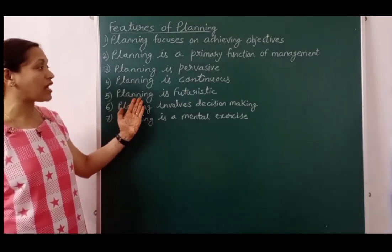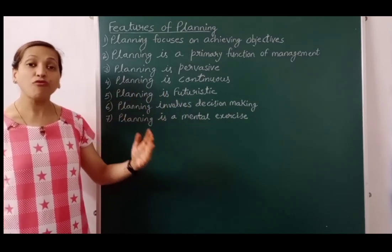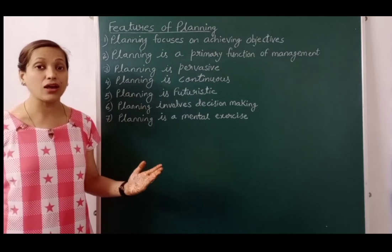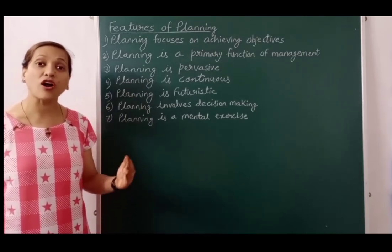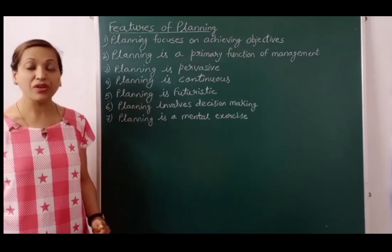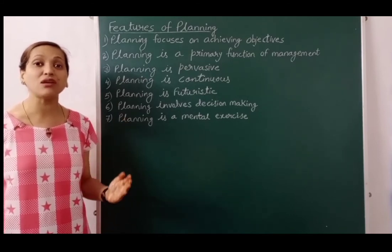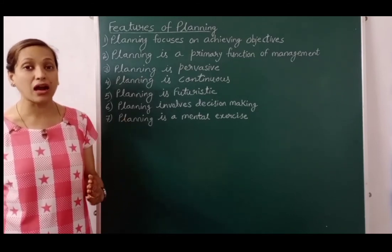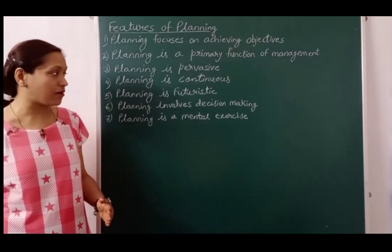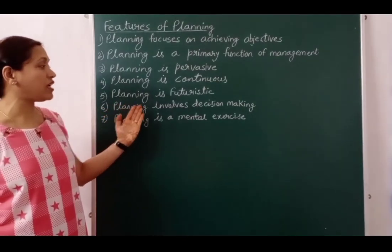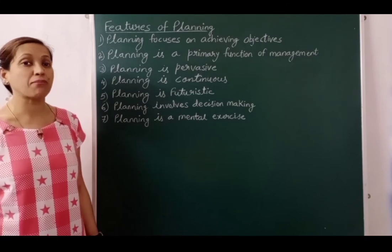The fifth feature is: planning is futuristic. Plans are always made for the future. What can happen in the future and what will be the best possible option at that time — by predicting and analyzing this, planning is done. For example, a sales manager will decide how much sale he can achieve in a season, and based on this prediction he will make the production plan.